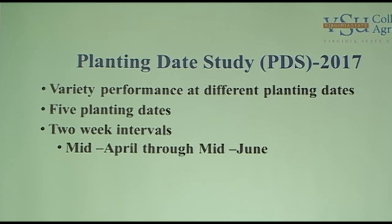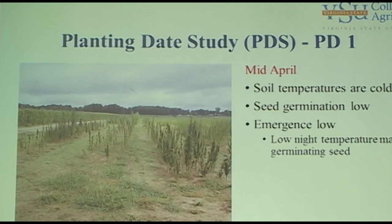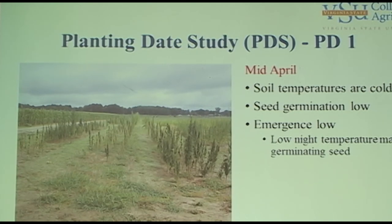We have seven varieties for grain and five varieties for fiber. For our planting date study, we did our first planting on April 15th and we did that every two weeks after that, up to June 15th. This is planting date one, which is April 15th.